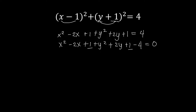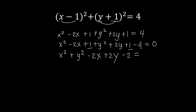We write starting with x squared, then plus y squared, then minus 2x, then plus 2y. Then we combine the constants: 1 plus 1 is 2, minus 4 gives negative 2. So this is minus 2, equal to 0. This is now our general form of the equation of the circle.